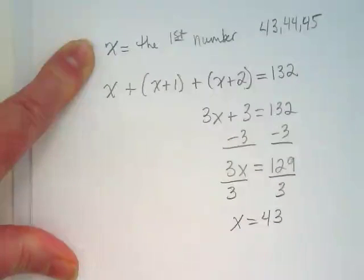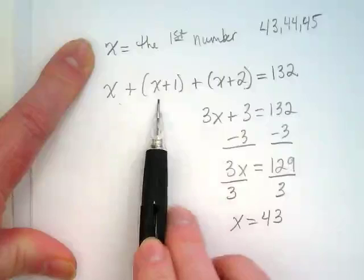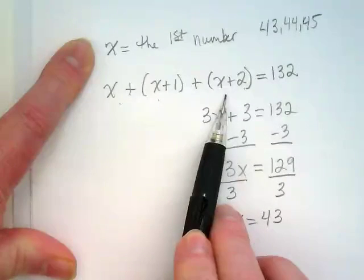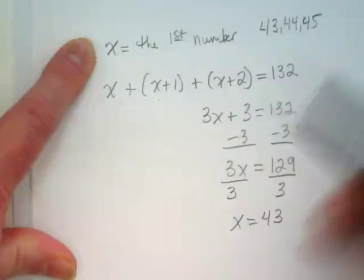How can we check it? There's two ways. The first way is we can put 43 here, 44 here, 45 here, and solve, right? What's the easier way? Just add them up, right?